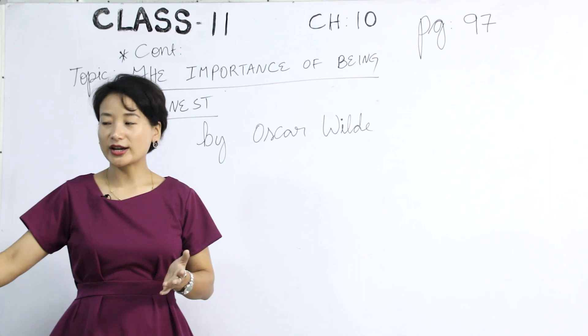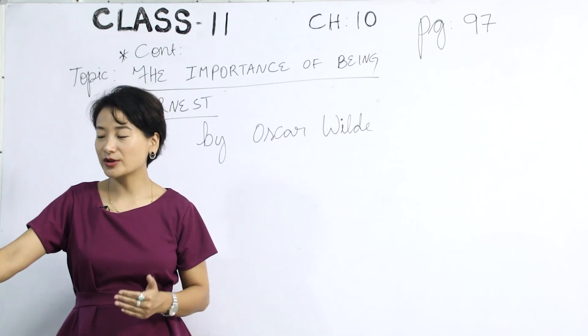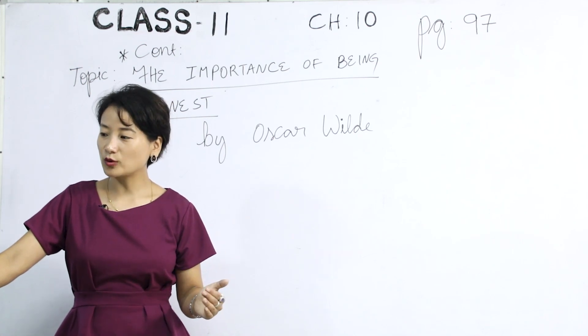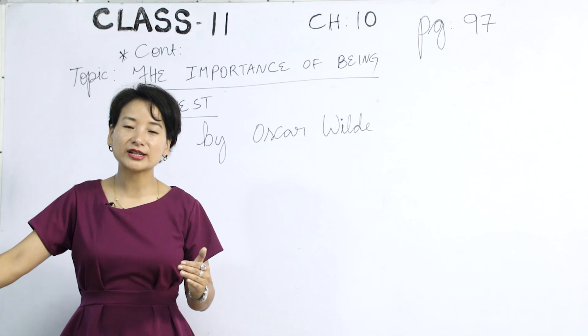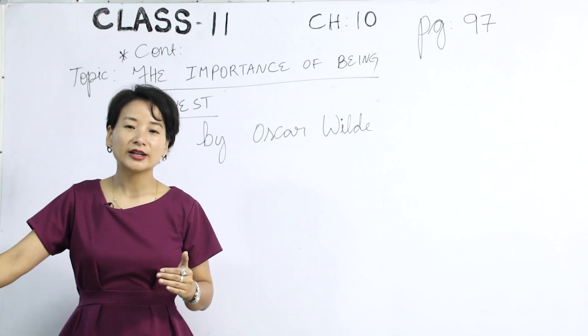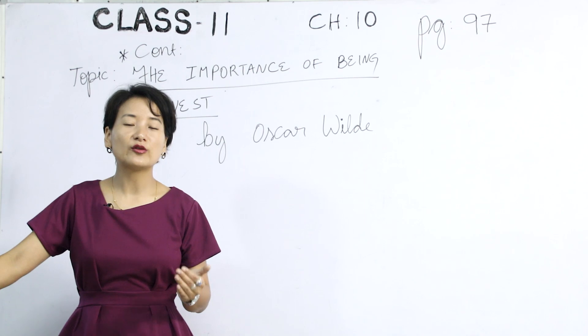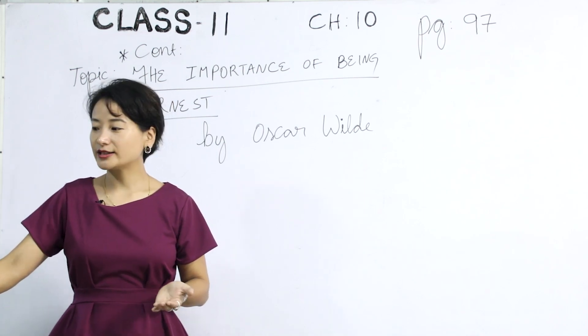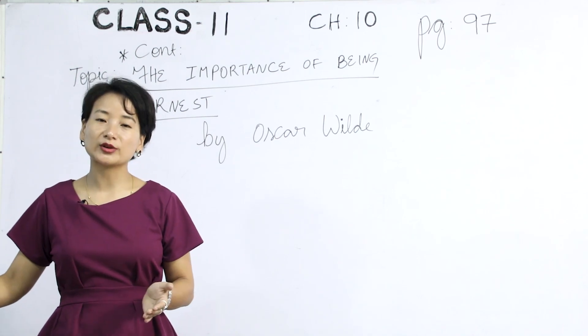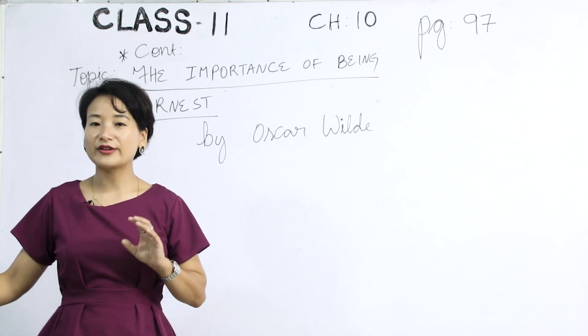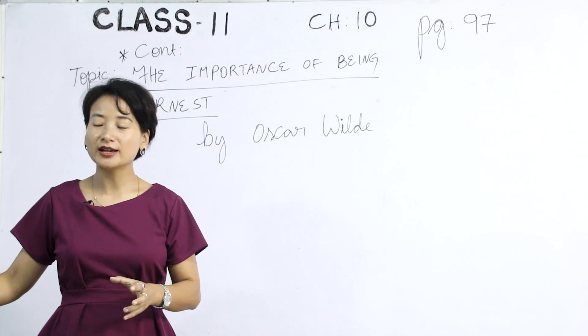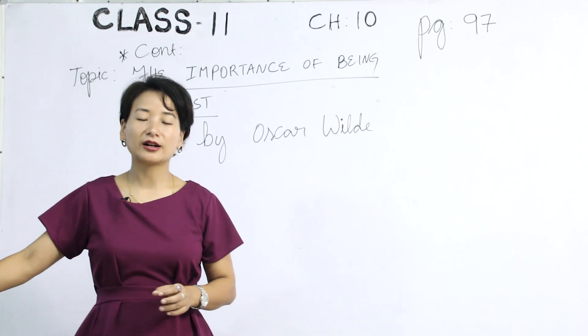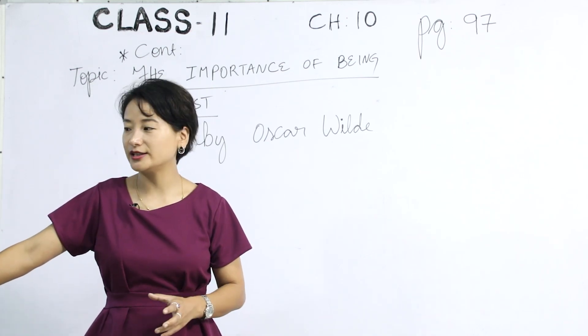So that is the character of Gwendolyn Fairfax. Cicely Cardew, Jack's ward, the granddaughter of the old gentleman, Mr. Thomas Cardew. Like Gwendolyn, she is also obsessed with getting married to a person called Ernest. In the mysterious case of who is Cicely, this has also intrigued Algernon to fall in love with Cicely. She maintains a diary and at 18, she's supposed to inherit a great wealth. So she's a very rich lady representing the upper class. She has her own governess and is very well learned.